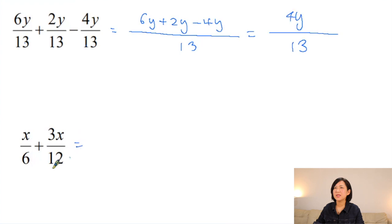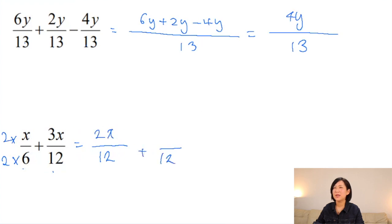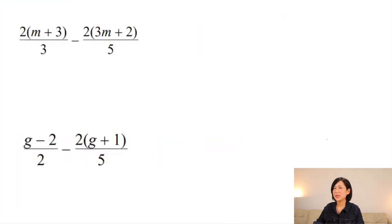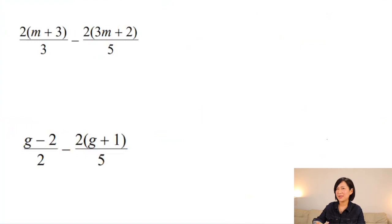The next fraction has a different denominator — 6 and 12 — so our common denominator is 12. That's why you need to multiply 2 to the first fraction's denominator and numerator, giving 2x, then add 3x/12. Now you need to add all the numerators, which gives 5x. To add these algebraic fractions we use collecting like terms and expanding brackets — we're practising all the skills from the previous lesson.